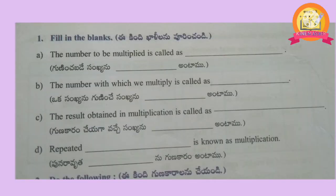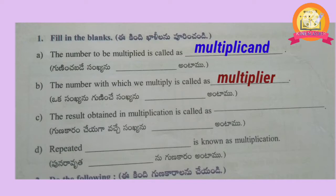Worksheet 1, first roman: fill in the blanks. The number to be multiplied is called the Multiplicand. The number with which we multiply is called the Multiplier. The result obtained in multiplication is called the Product. Repeated addition is known as Multiplication.